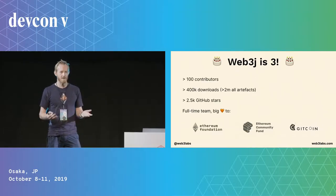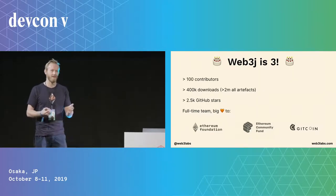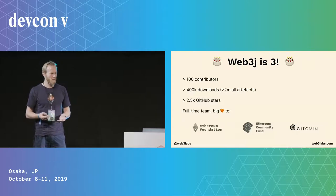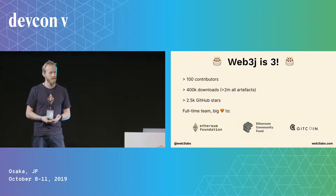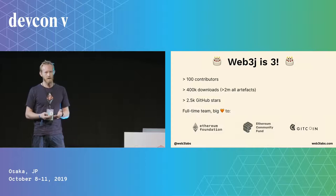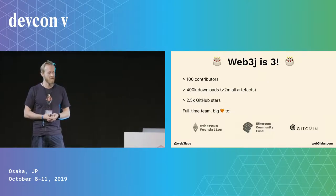It's a special occasion for us at DevCon because it's actually a birthday for Web3J — it's now three years old, so we're really happy to have reached this milestone. The project has always been open source. We've had over 100 contributors, and over 400,000 downloads — or over 2 million total downloads — showing there's a good amount of traction.